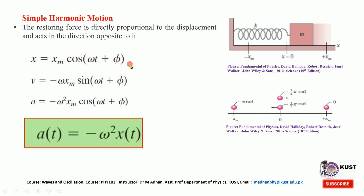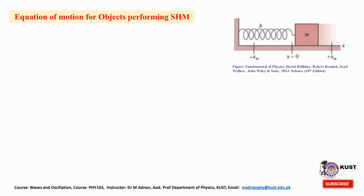The phase constant phi tracks the state of motion during the dynamics. In this figure one can see the value of phi at different positions at t equals zero. So these are the three parameters — amplitude, angular frequency, and phase constant — with which one can describe the motion of the harmonic oscillator. Now we will see the mathematical equation of motion for the simple harmonic oscillator, considering the same spring-mass system.